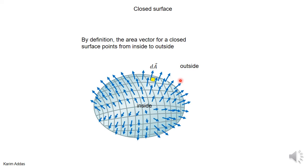These are what the rest of the area vectors might look like. You see they always point from inside to outside, and they are always perpendicular to the surface at each particular location. Here the vector is perpendicular to the surface at this location, and here too — they don't have to point in the same direction at different elements of area.